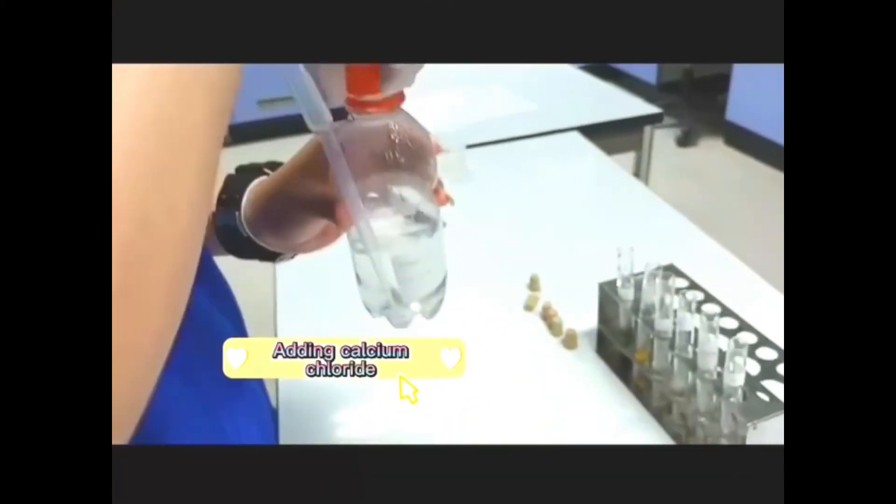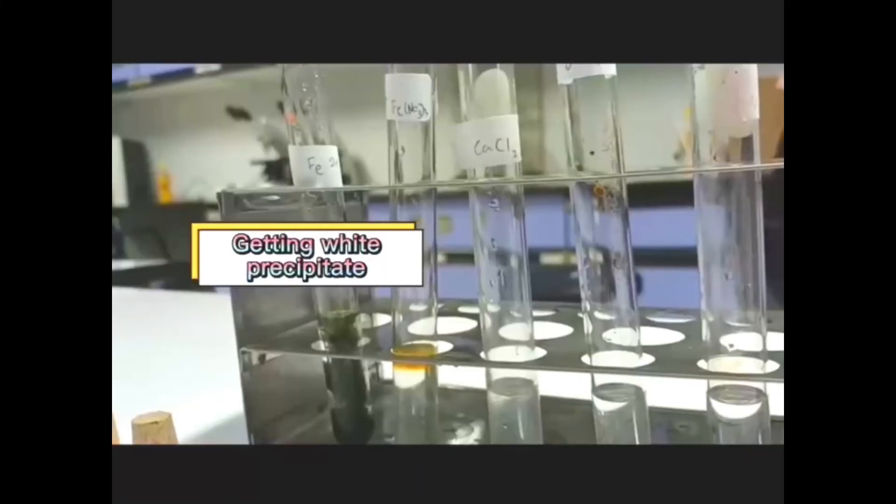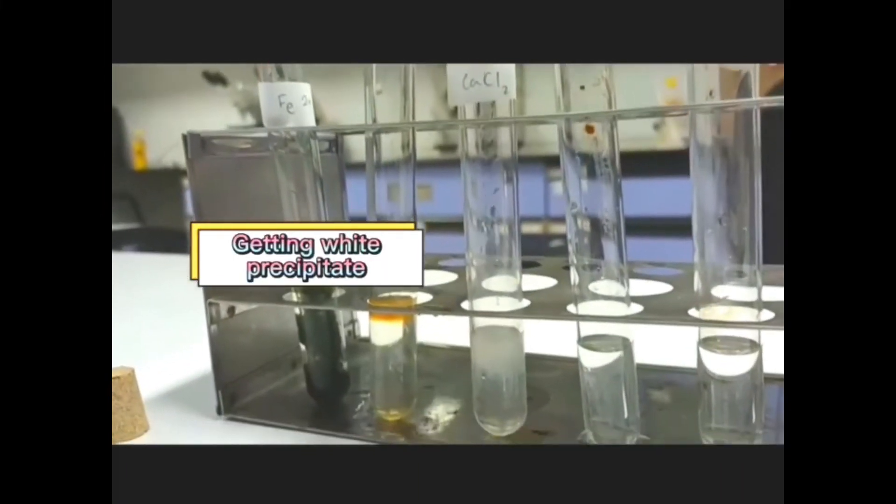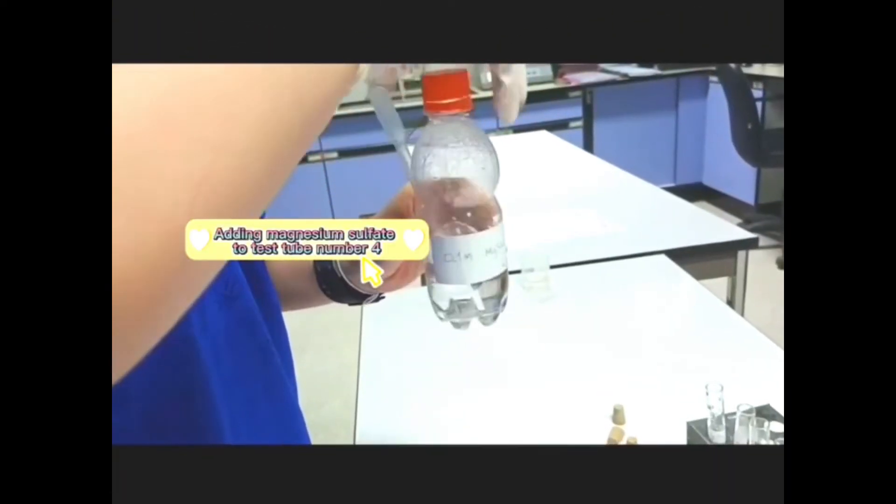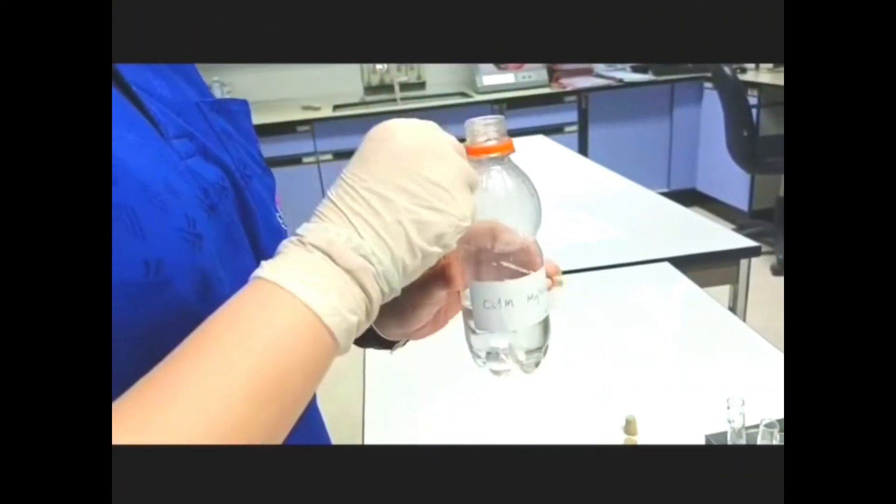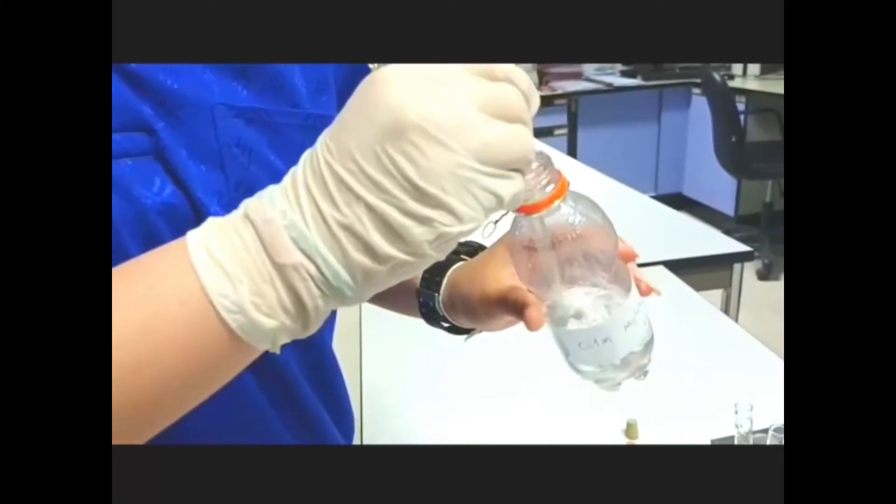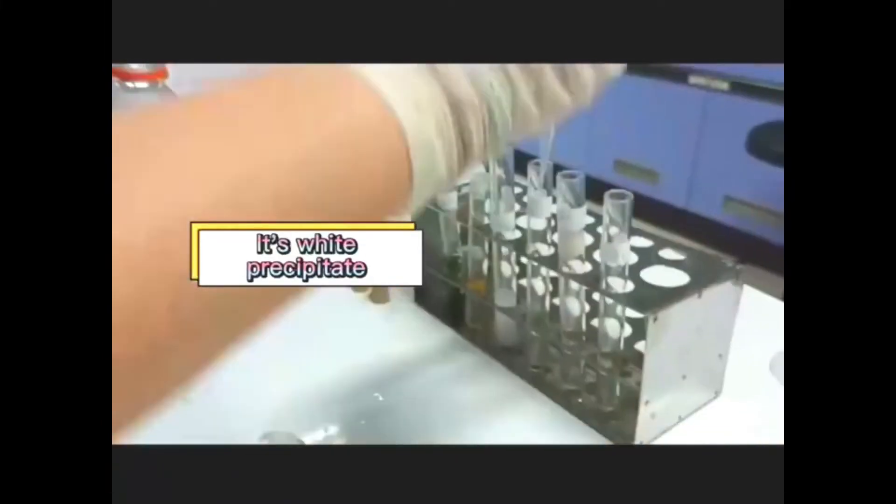Then, adding calcium chloride to get white precipitate. Adding magnesium sulfate to the test tube, we will get white precipitate.